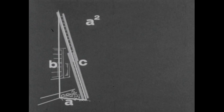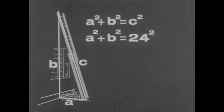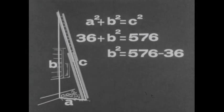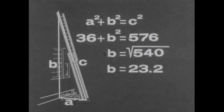Using the formula A squared plus B squared equals C squared, we can make the following calculations. Side C, representing the ladder, is 24 feet long. 24 squared is 576. Side A, the distance from the bottom of the ladder to the wall, is 6 feet. 6 squared is 36. Subtracting 36 from 576 gives us 540. This is the square of side B. To find the length of the side, we take the square root of 540, which is 23.2.